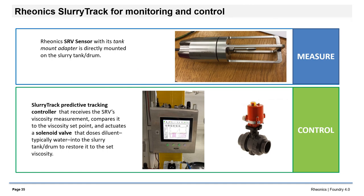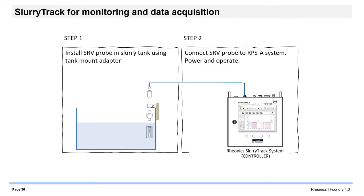Another option for integrating the SRV into shell room automation is the Rhionics Slurry Track. Slurry Track is a turnkey solution that provides slurry viscosity control right out of the box. It is built on three pillars: the SRV sensor, a predictive controller which can send control signals to valves that control diluents and other additives to the slurry tank, and an intuitive user interface with process lock software with one-touch viscosity setting. Installation is easy and plug and play. The system can be used as a monitoring and recording device. The SRV is mounted in the slurry drum and connected to the slurry track system by means of a cable. The operator can observe viscosity trends on the monitor, and the system provides a log to enable long-term process monitoring and integration into factory data systems.